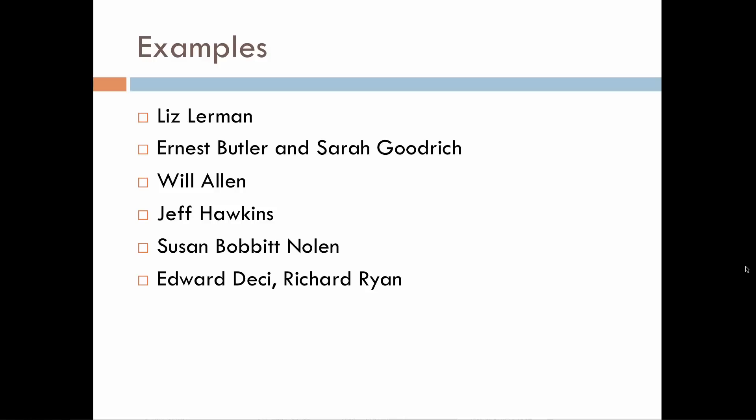E in CTEK stands for Examples. In the reading we're doing for today, it crosses over a couple of chapters. He's got three examples still part of the end of chapter one: Liz Lerman, the Butler and Goodrich couple, and Will Allen. Then there are three examples that are part of chapter two — the first is Jeff Hawkins, another one of his exceptional people he studies, and the other two are a person and a pair of researchers who've done studies he discusses. These examples come from successful college grads and from researchers, scientists, and educators exploring the kinds of questions Bain is interested in.